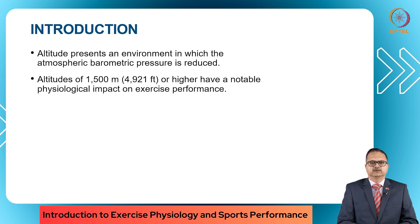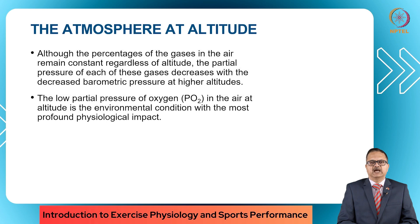Altitude presents an environment in which the atmospheric barometric pressure is reduced. If the altitude is 1500 meters or higher, there is a notable physiological impact on exercise performance. Although the percentage of gases in the air remain constant regardless of altitude, the partial pressure of each gas reduces with the decreased barometric pressure at higher altitudes. The low partial pressure of oxygen at altitude is the environmental condition with the most profound physiological impact.